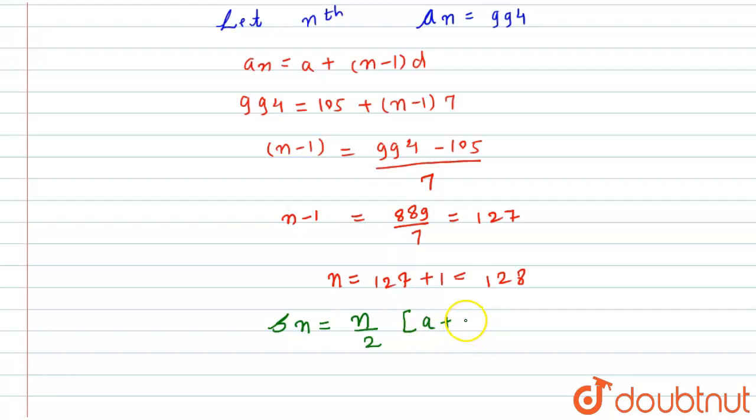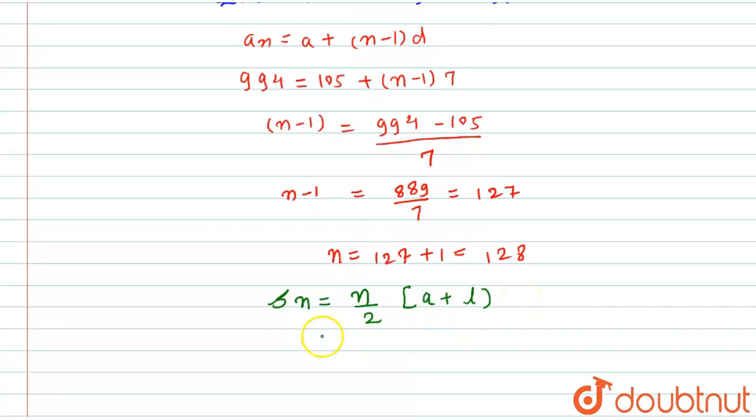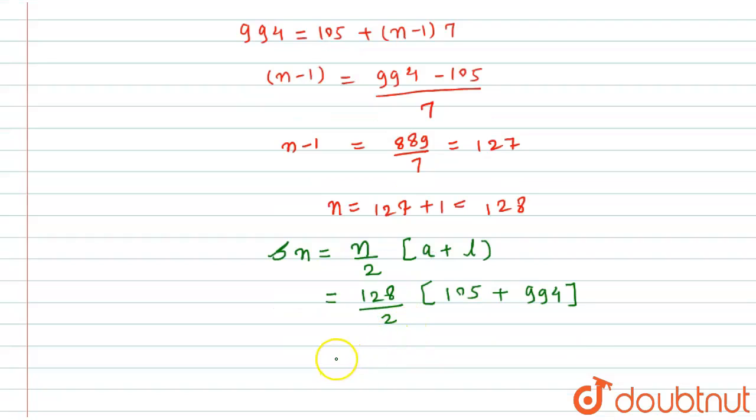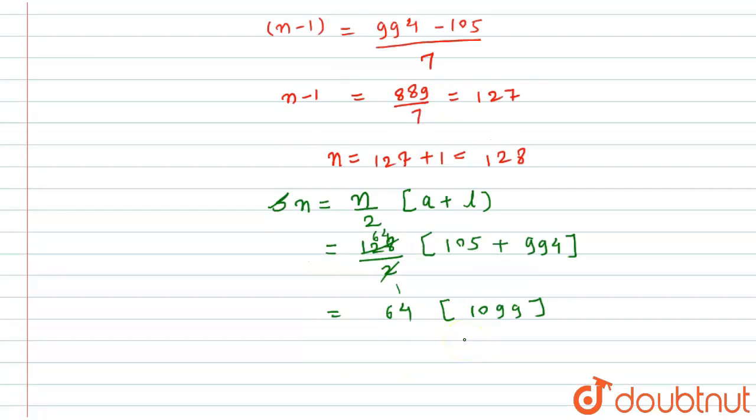Now after adding this 105 and 994, I will get 1099. Okay, then two times one is two, two sixes are twelve, two fours are eight. Okay, so this will be 64. And after multiplying this, I will get this sum, that is 70,336.